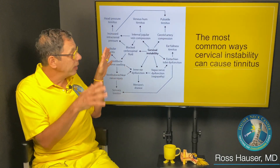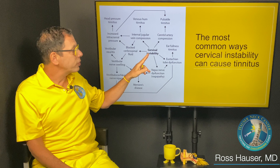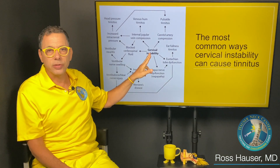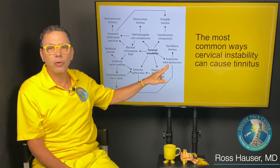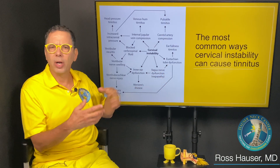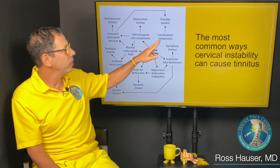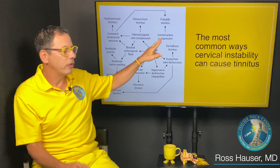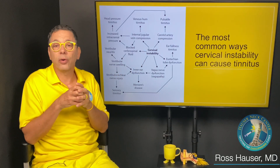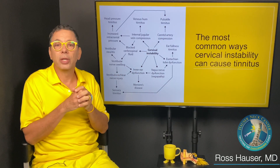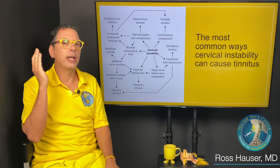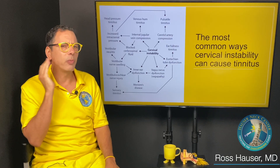The most common way that cervical instability causes ringing in the ears is by disrupting eustachian tube function — we'll talk more about that shortly. If it causes compression of the carotid sheath or carotid artery, you normally get a pulsatile tinnitus that almost varies with the heart rate.